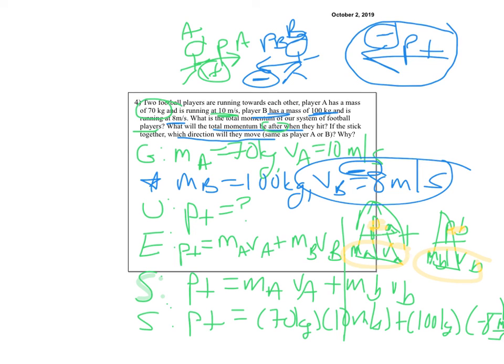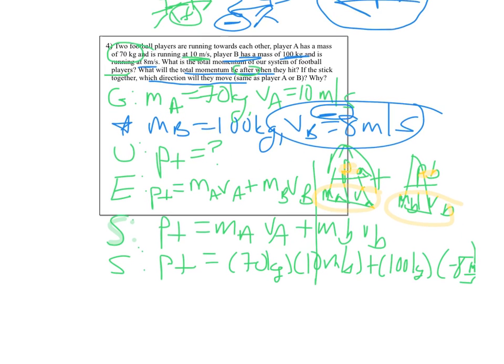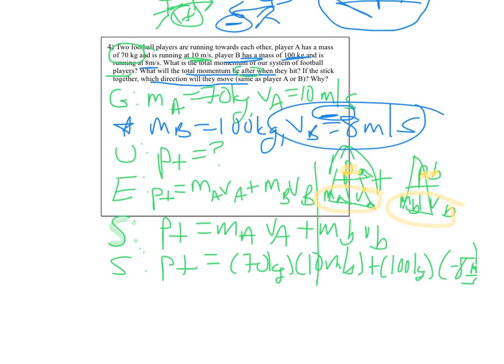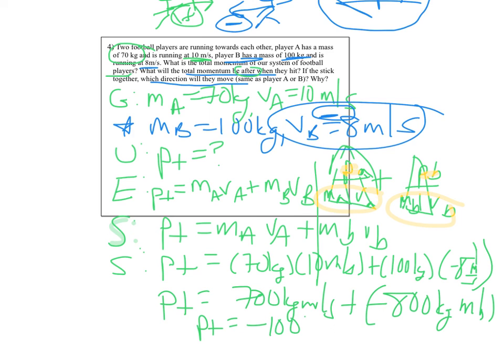And so we end up with P T equals, remember this was 70 times 10, so this is 700 kilograms meters per second, plus, remember this was negative 800. We kind of knew that ahead of time. 800 kilogram meters per second. But a positive plus a negative, you subtract. So we're going to end up with P T is equal to negative 100 kilograms meters per second.